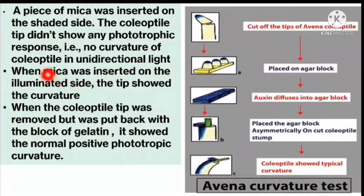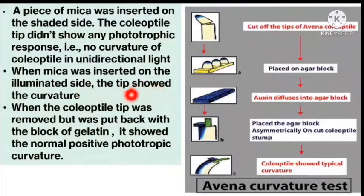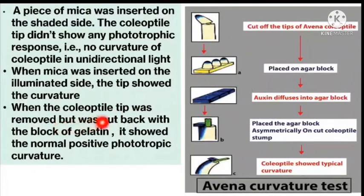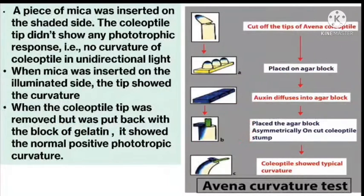When mica was inserted on the illuminated side, the tip showed curvature. When the coleoptyle tip was removed but placed back into a block of gelatin, it showed normal positive phototropic curvature.